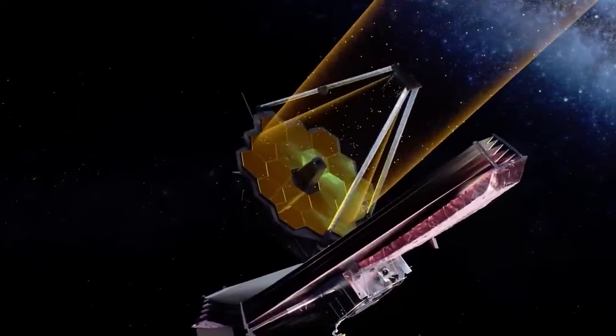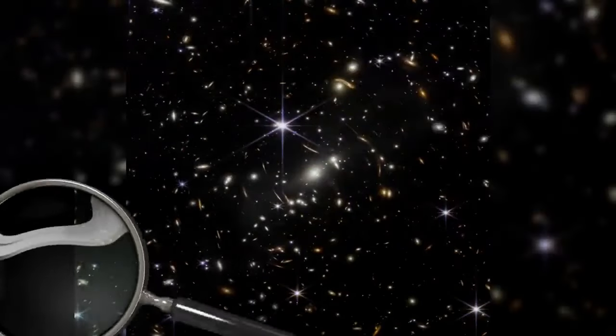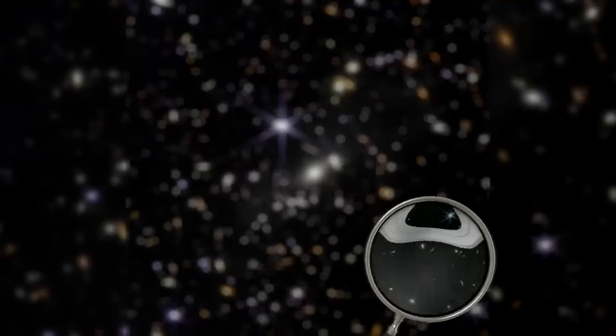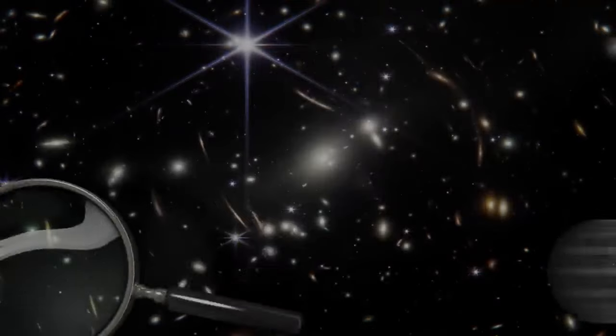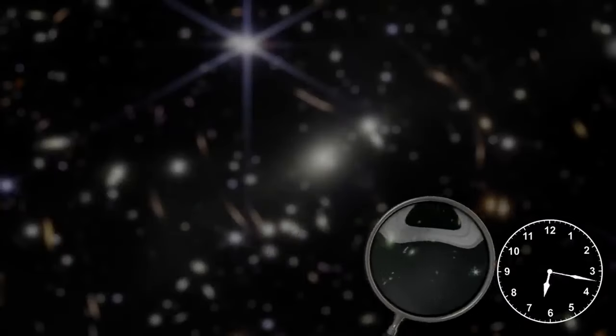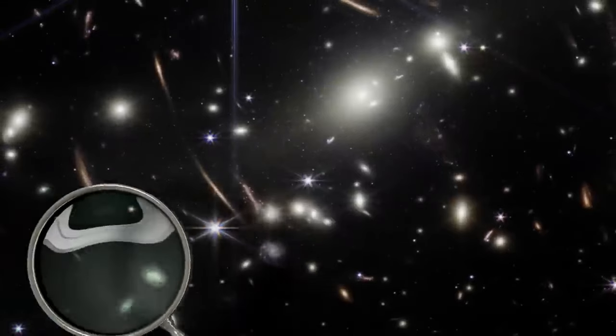Webb also demonstrated the effect of gravitational lensing when a supermassive star cluster created such a distortion of spacetime that, as through a magnifying glass, brought distant galaxies from the depths of the young universe closer to us. It took the telescope just 12.5 hours to take the image.